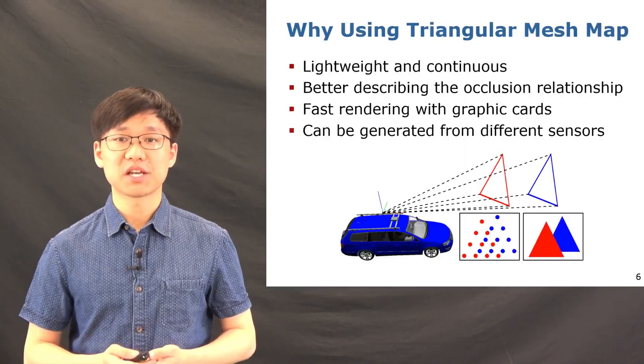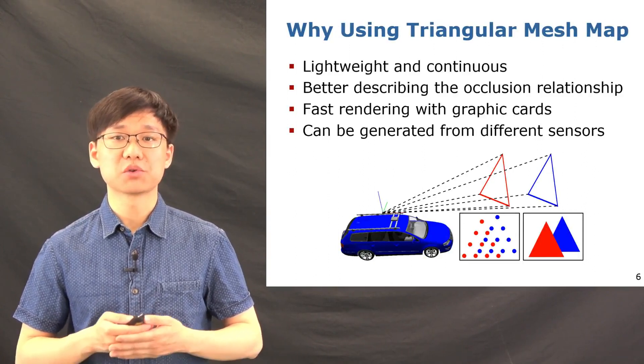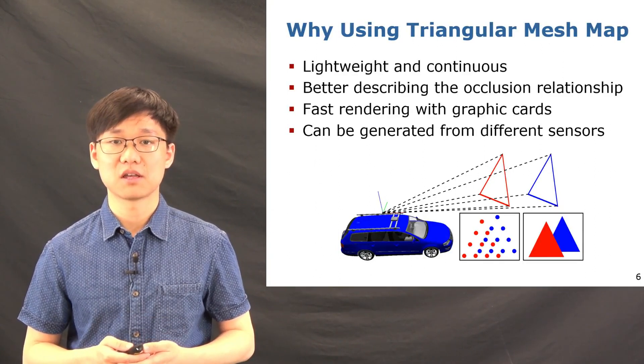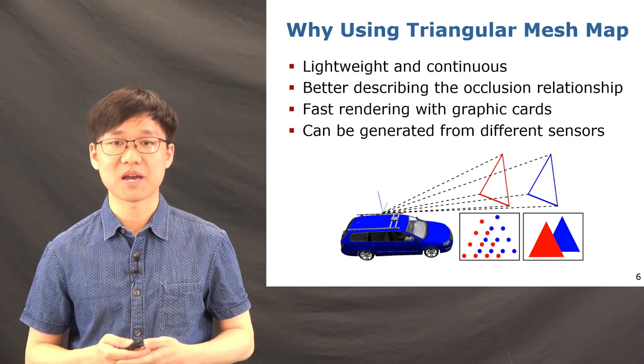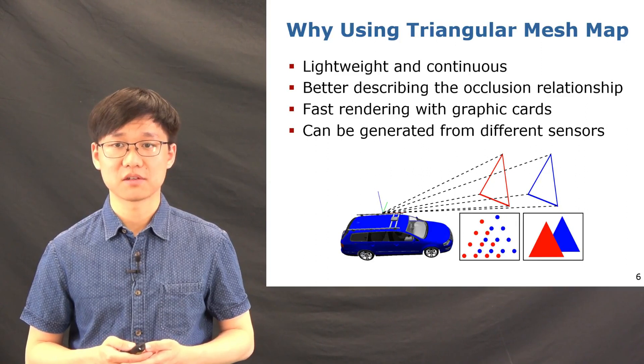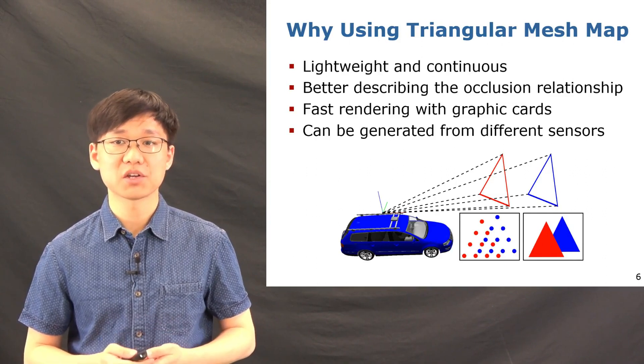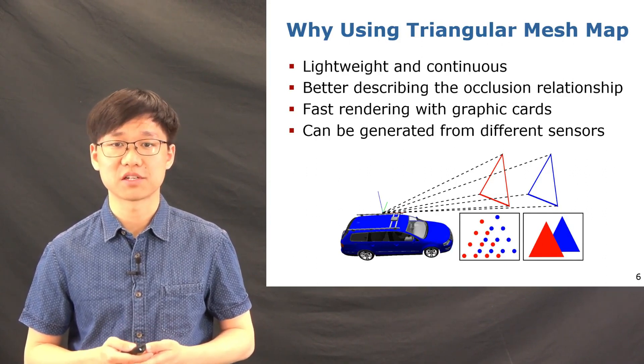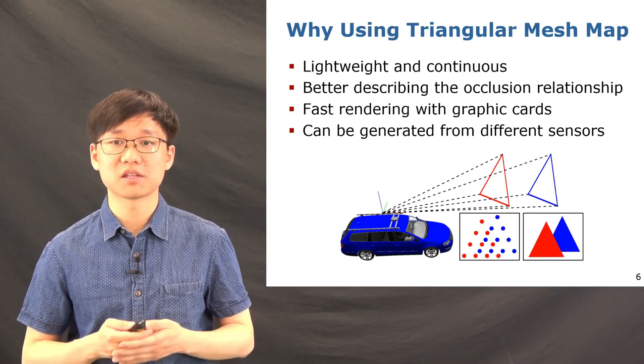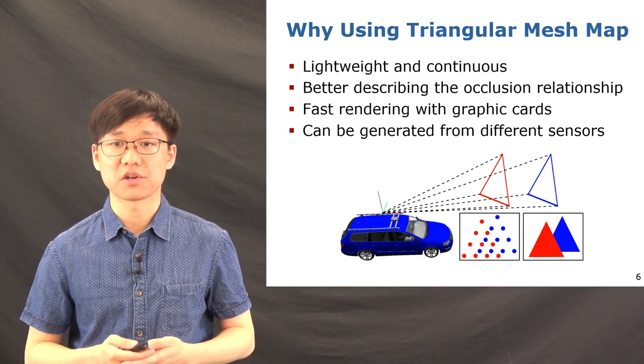For a map representation in this work, we use the triangular mesh maps. We use Poisson surface reconstruction to obtain the representation of the map as triangular meshes from point clouds. There are several reasons to use triangular mesh maps. First, the triangular mesh maps are lightweight and continuous. For a small area, instead of saving a group of 3D points for each triangular mesh, we need to only store three vertices, which is very lightweight. Second, triangular mesh maps can better represent the occlusion relationship between different objects, which is also shown here in this figure.